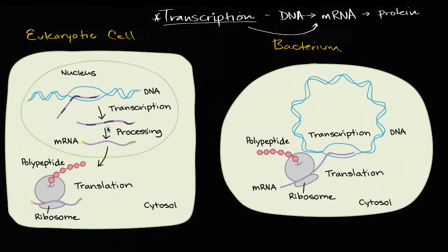In eukaryotic cells, and we're going to get into a little bit more depth in this video, the transcription, the DNA to mRNA, that happens inside of the nucleus. And there's essentially two steps here. You go from DNA to what we would call pre-mRNA.